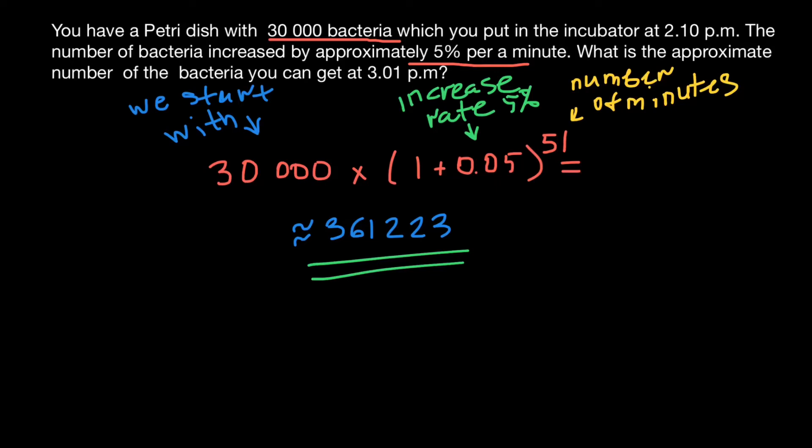But what if instead we would have a decay? So we would have, for example, a decrease by 5% every minute. Then here, this plus sign, we would change to minus.